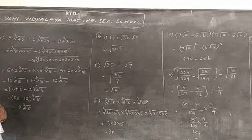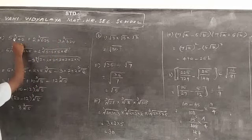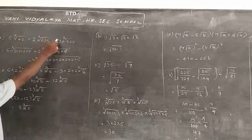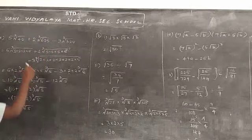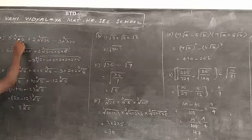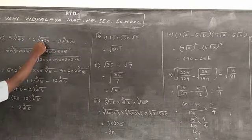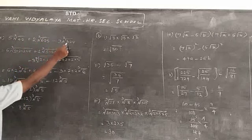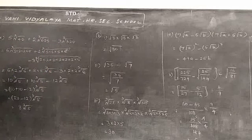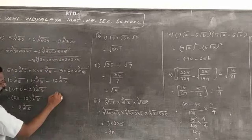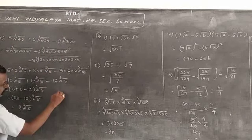Here all the terms are in cube root, but inside the cube root we have 40, 625, and 320. So we factorize each one. Follow the factorization principle for 40 first.